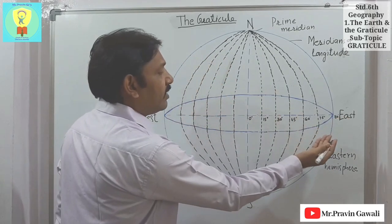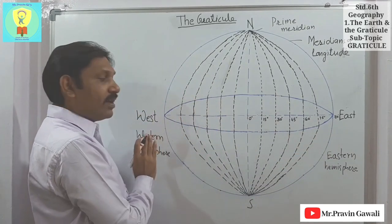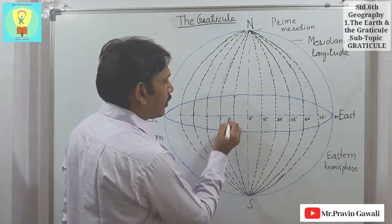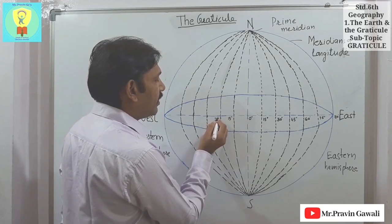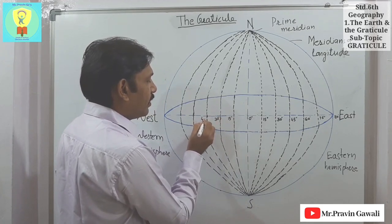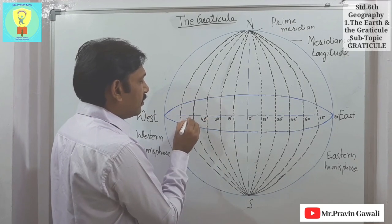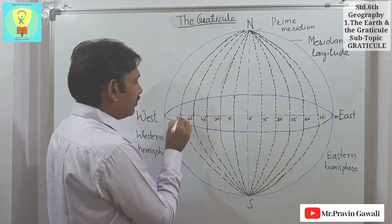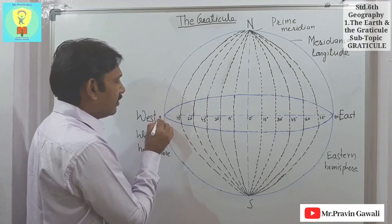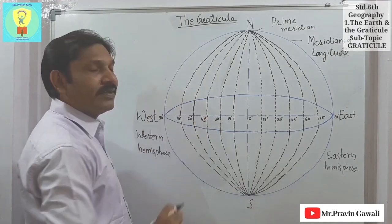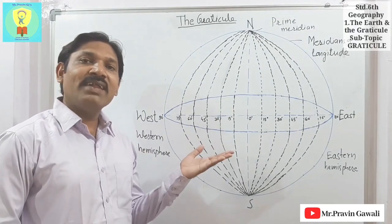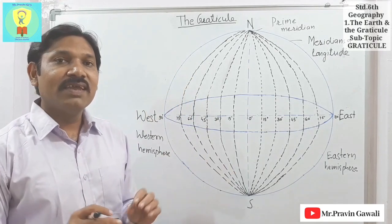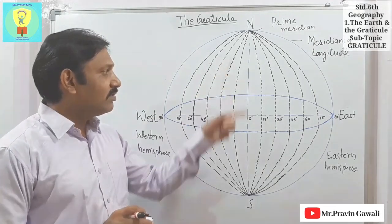This is in the eastern hemisphere, and in the same way, in the western hemisphere: 15 degrees, 30 degrees, 45 degrees, 60 degrees, 75 degrees, and at the last, 90 degrees. Then 180 degrees on the opposite side, and 180 plus 180 equals 360 degrees. As we know, the circle or the globe has a 360-degree measurement.